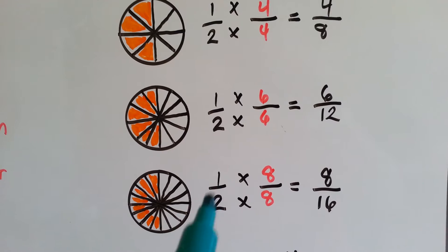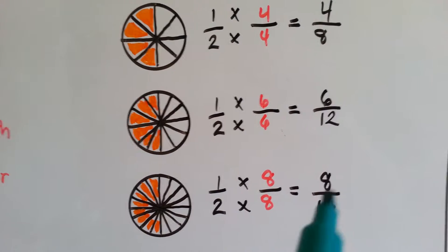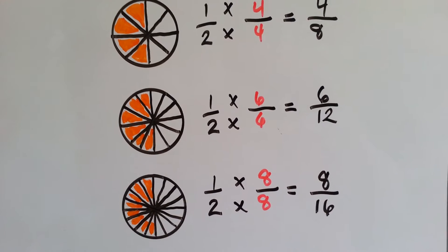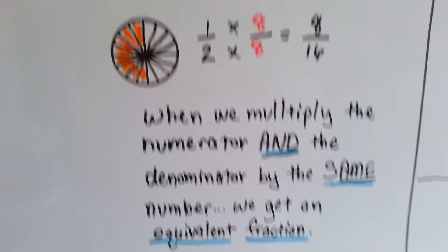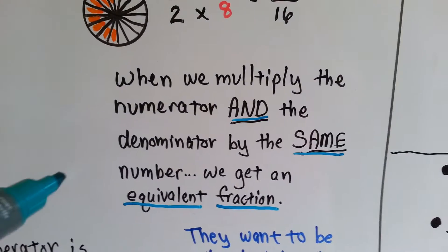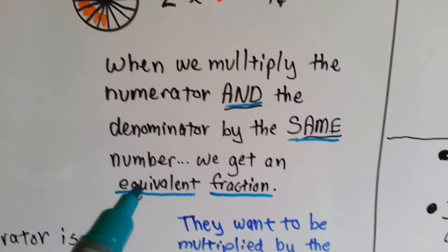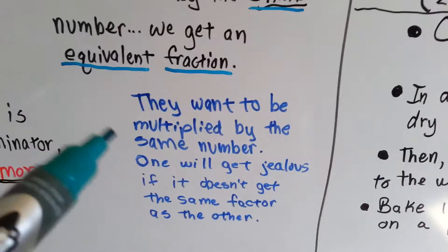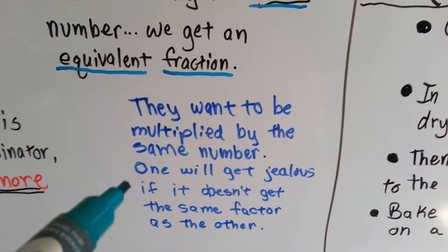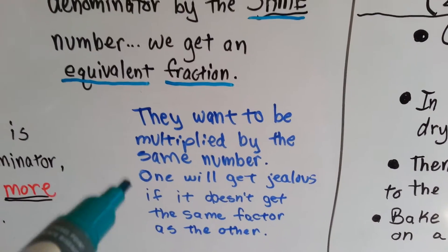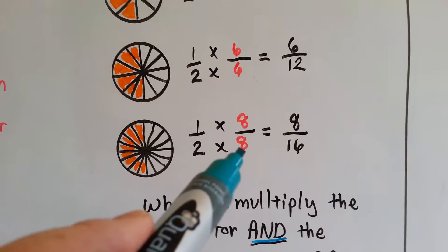If we multiply the numerator and denominator of one-half by eight, we get eight-sixteenths. Eight-sixteenths is an equivalent fraction to a half. So just remember: when we multiply the numerator and the denominator by the same number, we get an equivalent fraction. They want to be multiplied by the same number, because one will get jealous of the other if it gets a different factor — it says, 'If you get multiplied by eight, I want to get multiplied by eight.'